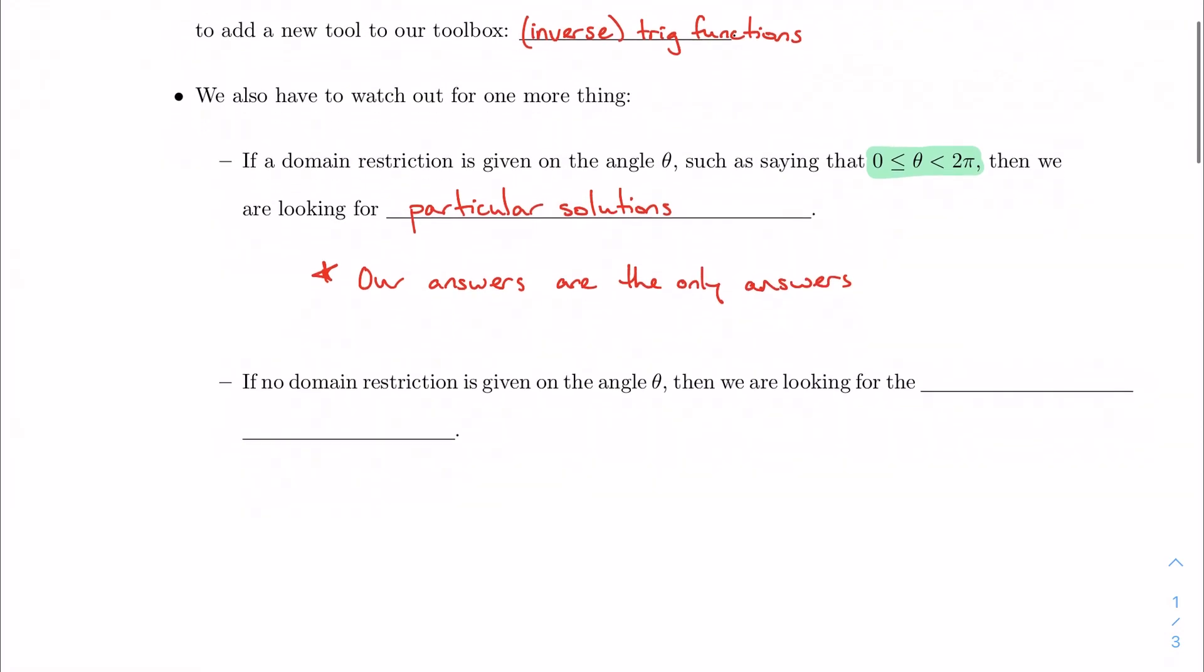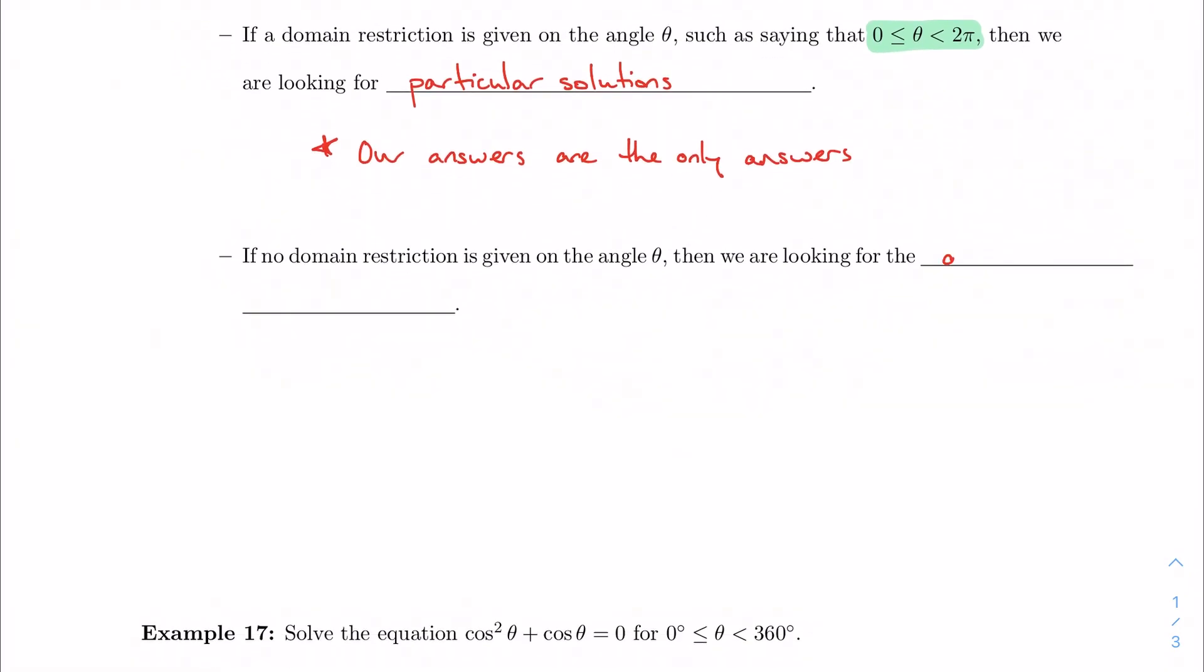If that domain restriction is not given, then we're looking for what we call the general solution. And if that's the case, we have to consider something called the period of the function. And what that just means for us for now is that we reach a point where the values start to cycle over a certain length of interval.